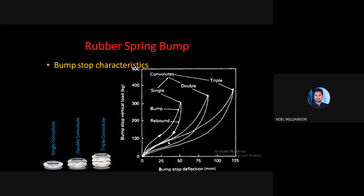Yesterday we were discussing anti-roll bars and rubber spring bumps. There are four types of springs: coil spring, leaf spring, torsion bar, and rubber spring. These four kinds of springs are utilized in automobiles, providing spring action for suspension. Any one of these types can be utilized, and for the rubber spring specifically, there are three types: single convoluted, double convoluted, and triple convoluted.